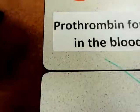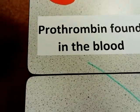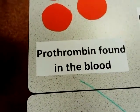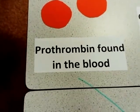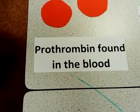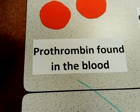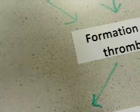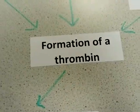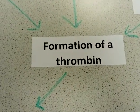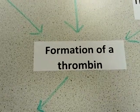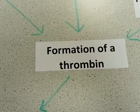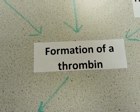The precursor to thrombin, called prothrombin, is always found in the bloodstream. The combination of these three factors enables the formation of thrombin.